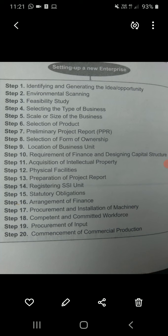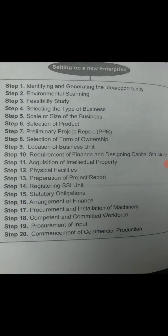The first step is identifying and generating the idea or opportunity. We have already discussed in detail that the entrepreneur uses various techniques for identifying and generating the idea — for example, brainstorming technique, brain mapping technique, brain writing technique, group discussion, SCAMPER, data collection through surveys, market research, etc. With the help of these techniques, the entrepreneur generates various ideas and tries to take benefit of them.